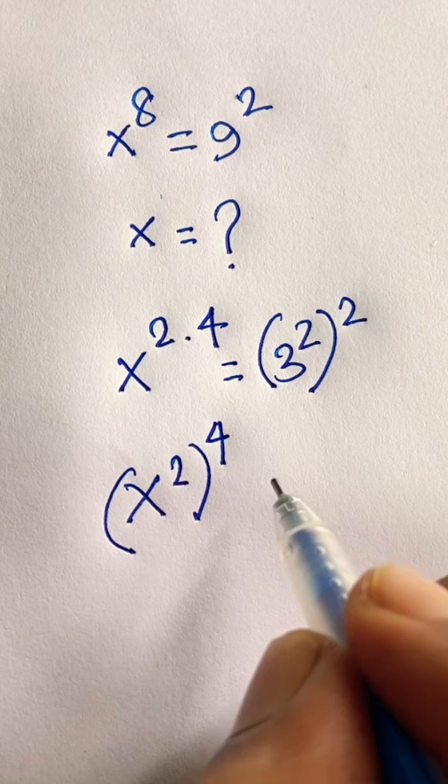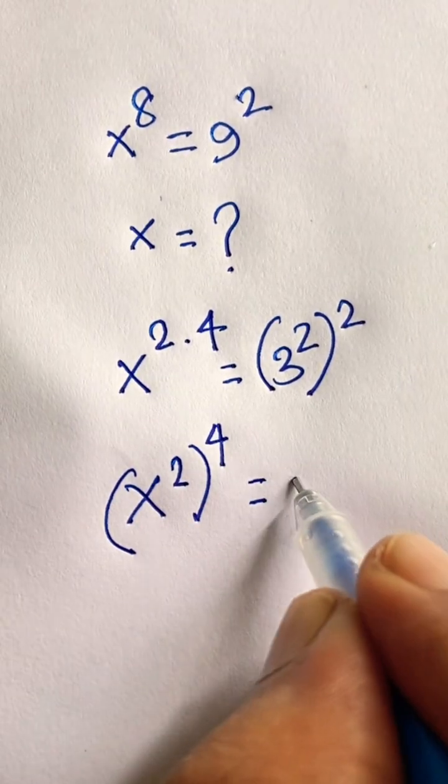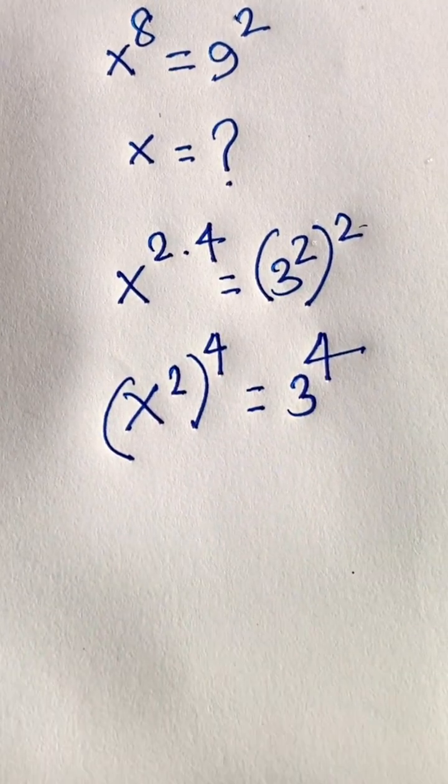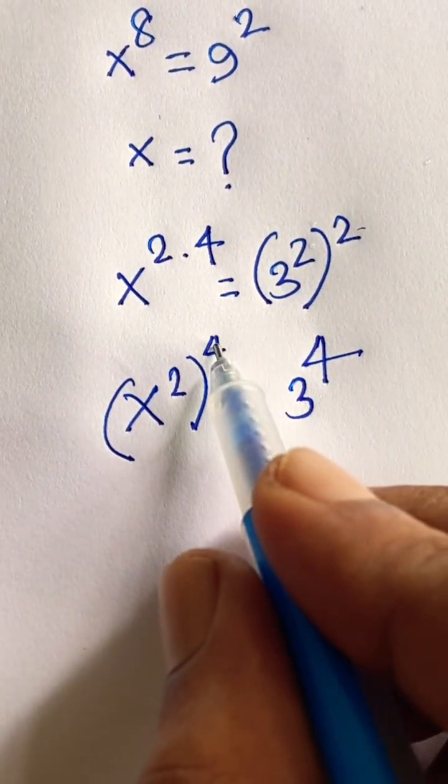these rules, these are equal. In this case, 3 to the power 2 times 2 will be 4. Then in this expression, here the exponent is 4 and here the exponent is 4.